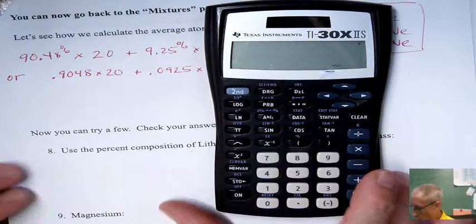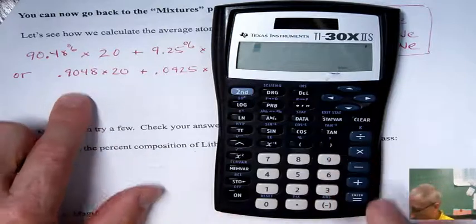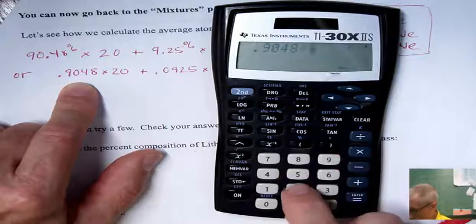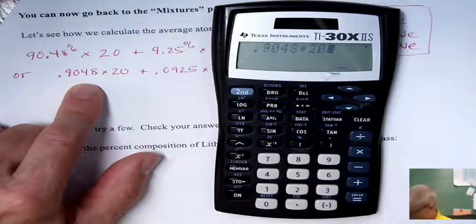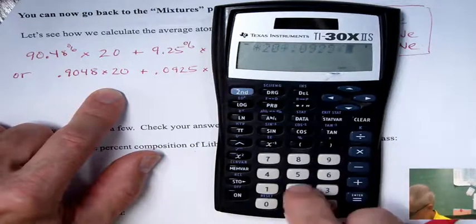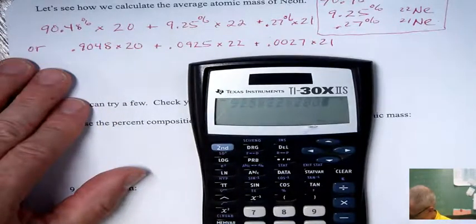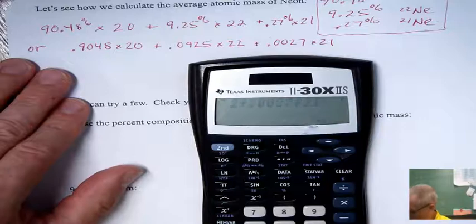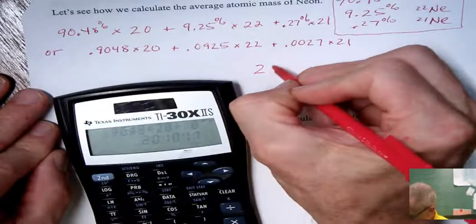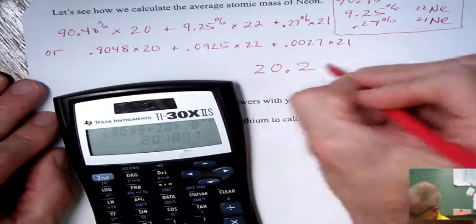I'm going to use my decimal version for this. This doesn't have a convenient percent key, so I'm going to show you 0.9048 times 20, plus 0.0925 times 22, plus 0.0027 times 21. And just hit equals, and there's our average. 20 point, and I'm just going to round this, 20.2.